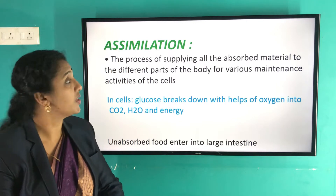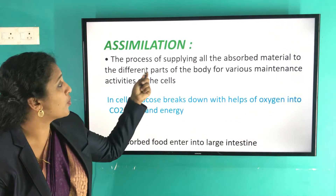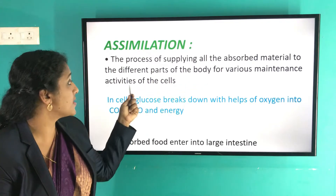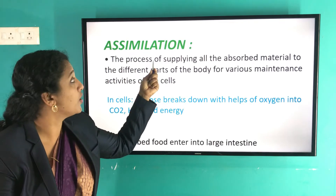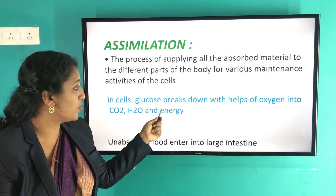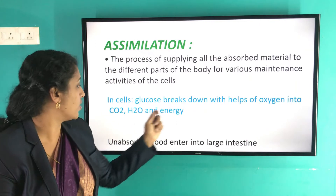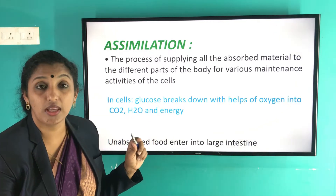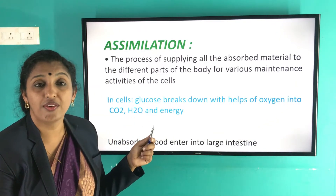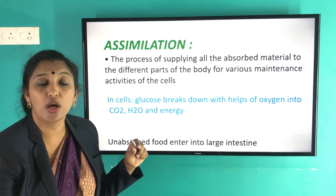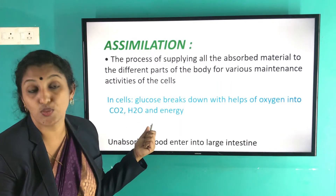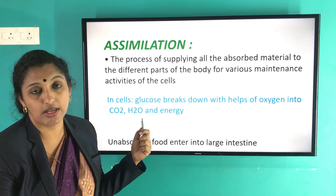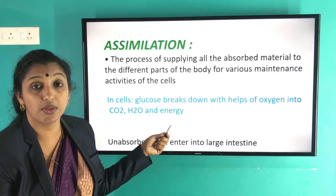The next step is assimilation — the process of supplying absorbed materials to different parts of the body for various cellular maintenance activities. In cells, glucose breaks down with the help of oxygen into carbon dioxide, water, and energy. Carbohydrates in food are broken down into glucose by different enzymes secreted by various glands, and we get energy from glucose through cellular respiration.